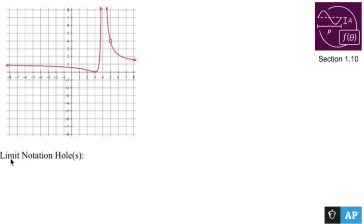I'm given a graph here and I'm being asked to find the limit notation of the holes. Now the hole exists where you have on your graph a little hole right there, which is a circle.